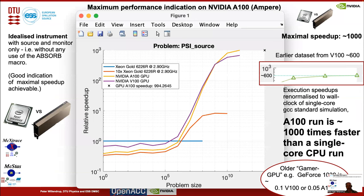The question is: how much faster? Looking at an idealized instrument containing only a source and a monitor — where no neutrons are lost or absorbed — this gives a good indication of the maximum speedup we can achieve. For a modern data center card from NVIDIA, the A100, this results in three orders of magnitude speedup. A V100, a slightly older card, clocks in at a factor of around 600. Older gamer GPUs like a GeForce 1080 are something like 10% of the V100, to give a ballpark of what you may achieve.